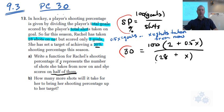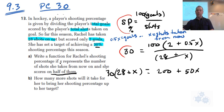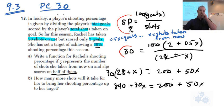How many more shots will it take for her to bring her shooting percentage up to her target? So now we just need to solve for X. So we're going to multiply both sides by 28 plus X, and that gets rid of this on that side. And so we can multiply this through. This is going to be 200 plus 50X. And so 30 times 28 is 840, plus 30X equals 200 plus 50X. So get all the X's together. We've got 20X over here when we take 30 away, and I've got 640 over here. And so X is going to be equal to 32.